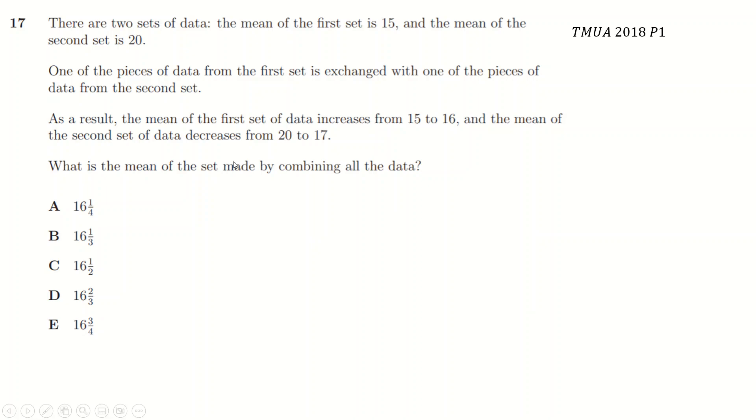We'll use both tactics here. So we've got set A of data and set B of data. The mean is 15 and 20, respectively. And we'll say that they just have M and N pieces of data in them. Now, what happens is, to start with, I guess, work out the totals. 15 times N is 15N for the total data points in this set. And here, 20M.